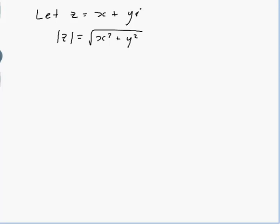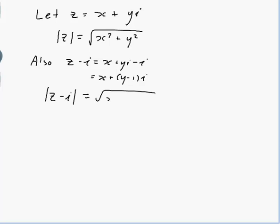So let's see, z - i would be x + yi - i which would be x + (y - 1)i. And so mod of z - i would be the square root of x² + (y - 1)².